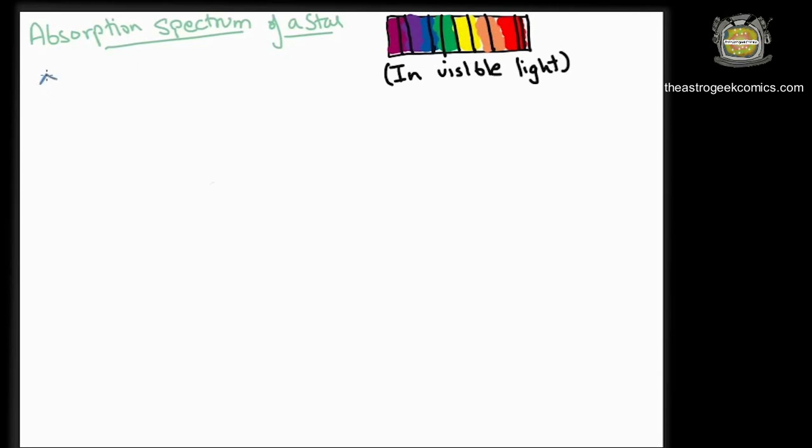But when you graph the intensities of the different wavelengths against their respective wavelengths, it looks like a bell curve with dips in intensity at specific wavelengths corresponding to the absorption lines of the elements present in the star. So how do we understand this curve?